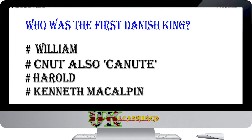Who was the first Danish king? William, Canute, Harold, Kenneth McAlpin. The answer is Canute, also called Cnut. The first Danish king was Canute, also called Cnut.